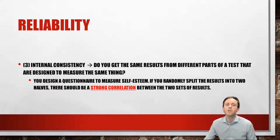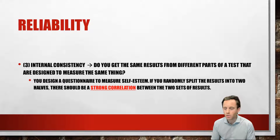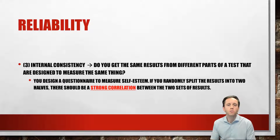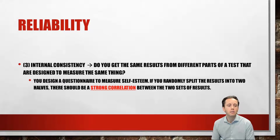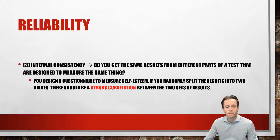The third kind of reliability is internal consistency. Take a test where we're measuring self-esteem — there are two parts to that test. Do each of those parts give a similar rating of somebody's self-esteem? That would ensure there's a strong correlation between both of those sets and the overall composite test.